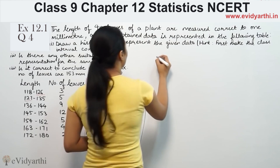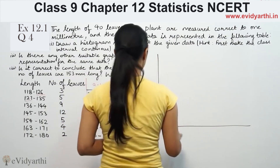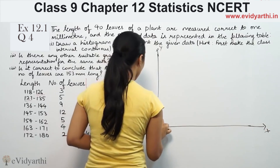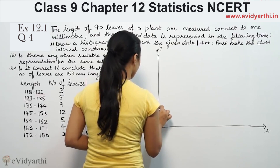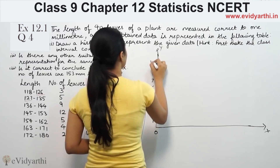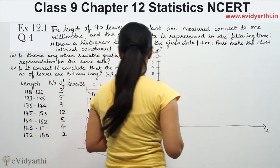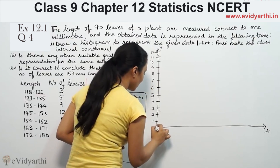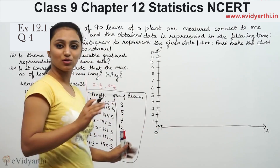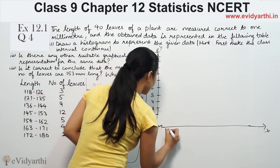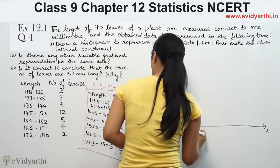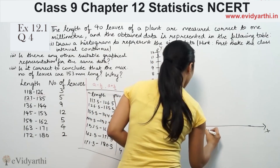We set up the y-axis and x-axis, with values on the y-axis going from 0 up to 12. On the x-axis we mark the class intervals: 117.5, 126.5, 135.5, 144.5, and so on in order.